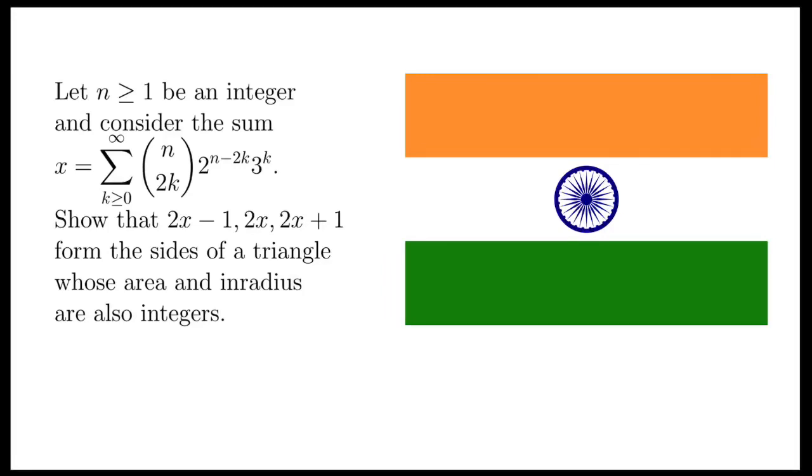Let's take a look at this problem taken from the 2017 Indian National Mathematical Olympiad. It says, let n greater than or equal to 1 be an integer and consider the sum from k equals 0 to infinity of n choose 2k times 2 to the n minus 2k times 3 to the k. Let this sum equal x. We have to show that 2x minus 1, 2x, 2x plus 1 form the sides of a triangle whose area and inradius are also integers.